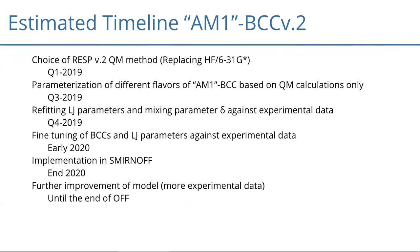Regarding the timeline: we rely on the RESP2 potential being defined first. Then we parameterize different flavors of the new BCCs with the replacement QM method, identify which method is closest to the target values, refit only the mixing parameter and Lennard-Jones parameters to get a better starting position, and then fine-tune BCCs together with Lennard-Jones parameters. We hope to implement that in Smirnoff by the end of next year, with further improvement as more experimental data becomes available.